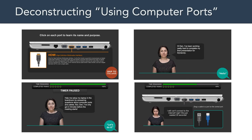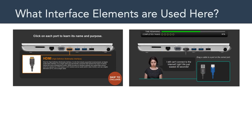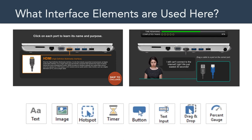Let's apply these building blocks to the 'using computer ports' example by asking what interface elements were required to create this multimedia instructional message. On one level it's text and pictures, but on another level it is a carefully designed interactive multimedia experience. The interface elements needed include text and images, hotspots and a timer, a button, a text input field — that's how the application knows our names — a drag-and-drop interaction to move cables to the proper ports, and a progress bar with a percent gauge to help track progress.